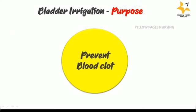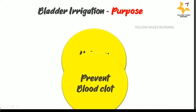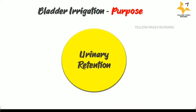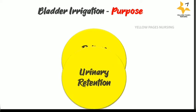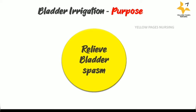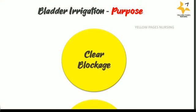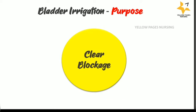What does bladder irrigation do? The purposes include preventing blood clot formation, treating acute urinary retention, relieving bladder spasm, and releasing blockage in the urinary catheter.